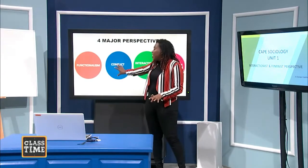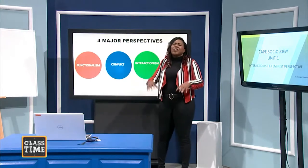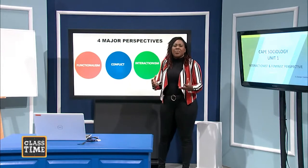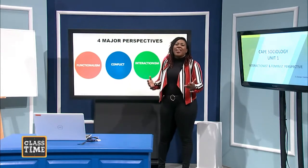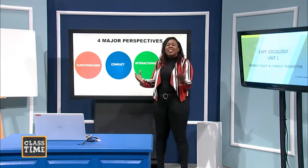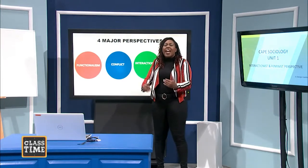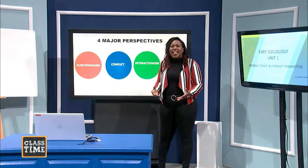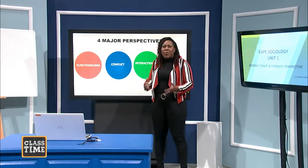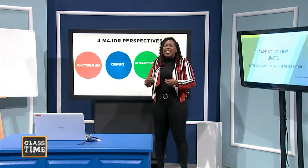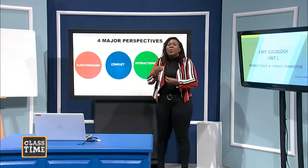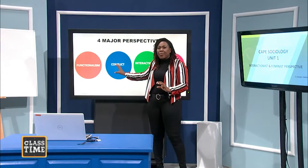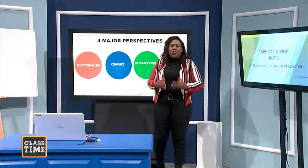We also looked at the conflict perspective, and I made it clear that the conflict perspective is a huge perspective, but the conflict theory that is most important is Marxism. Who's the big Marxist? Karl Marx. They explain society's existence by looking at the two groups that exist: the small rich group called the bourgeois in the capitalist society, and the large poor groups called the proletariats, and how the capitalist system is the basis of exploitation and conflict. You should remember the key terms.